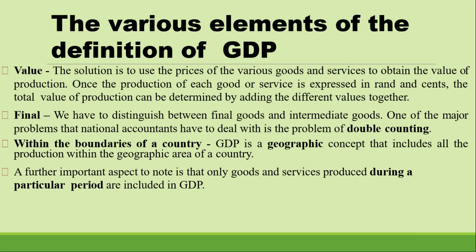A further important aspect is that only goods and services produced during a particular period are included in GDP. If you are calculating GDP for 2020, we only include goods and services that are produced in 2020, not the ones that were produced in 2019 and sold in 2020. We look at that particular period.